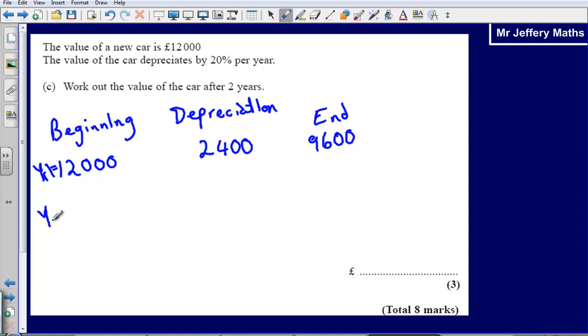So at the beginning of year 2 we could say that the amount we would have is £9,600. So at the beginning of year 2 we have £9,600. Again we lose 20%.